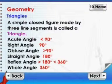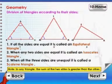Triangles: A simple closed figure made by three line segments is called a triangle. Division of triangles according to their sides: If all the sides are equal, it is called an equilateral triangle.